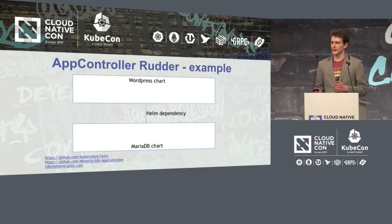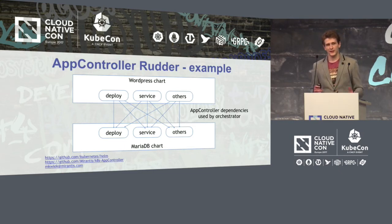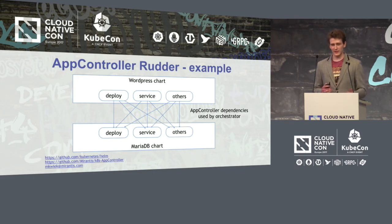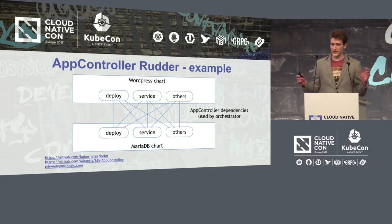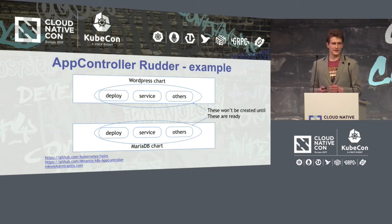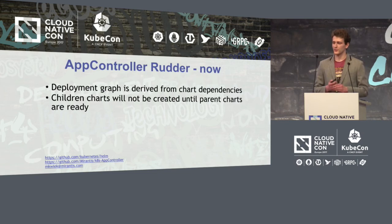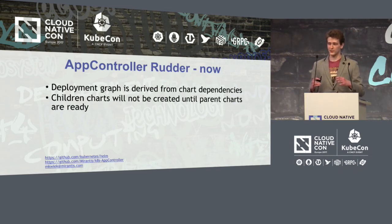For example, consider a basic Helm chart — say a WordPress chart which depends on the MariaDB chart, creating a Helm dependency. What the AppController-specific Rudder does is that when Tiller requests creation of the objects comprising the MariaDB and WordPress charts, it creates AppController-specific dependencies between all WordPress objects and all MariaDB objects. What this boils down to is that no WordPress object will be created before all MariaDB objects are actually ready — and by ready, I mean having a readiness probe returning that the status is ready. The current implementation of the AppController Rudder derives the deployment graph from chart dependencies, going through the Helm chart tree and creating dependencies based on that.